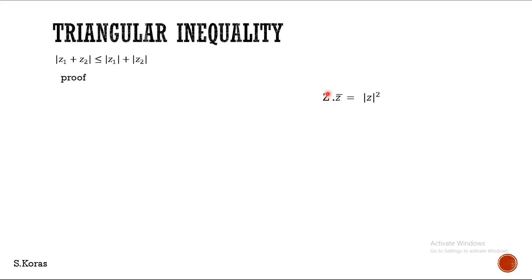Now, Z is also having an imaginary part with i, and this is also having an imaginary part. So, using these two complex numbers, we can use our complex number properties very easily, and we can prove this triangular inequality. So, better to square this modulus, and you can come out of the modulus. It will become just like two complex numbers like this formula.